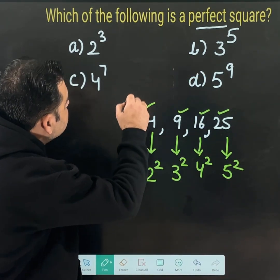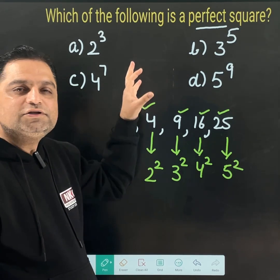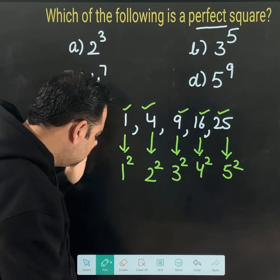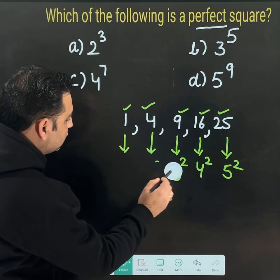From these 4 options, which number is a perfect square? It is very easy to find. I will tell you an easy, quick way of doing it.